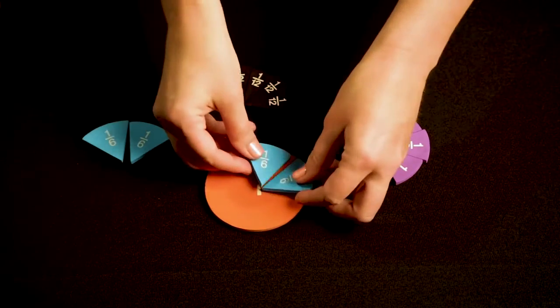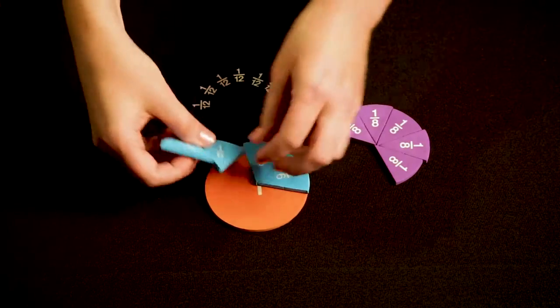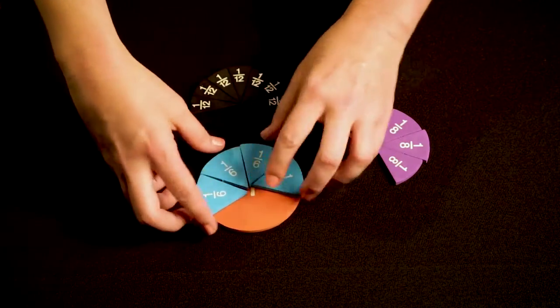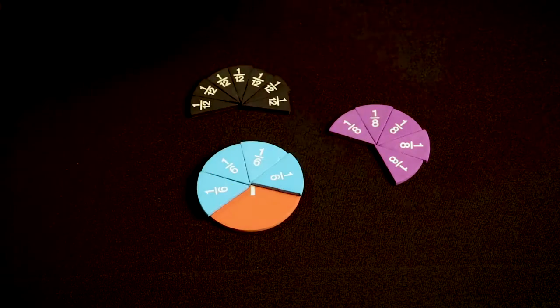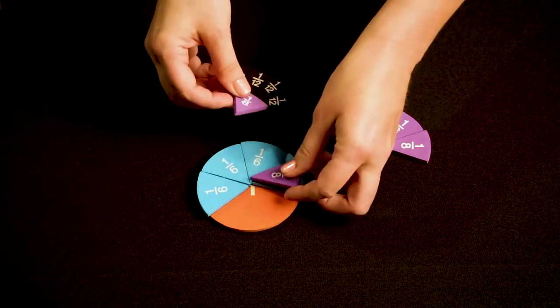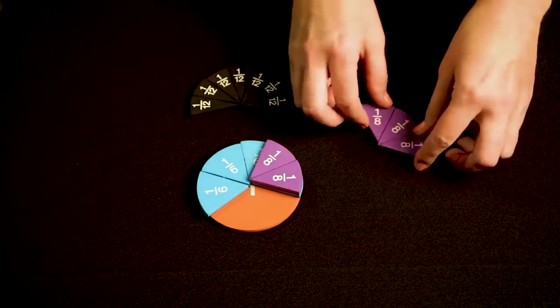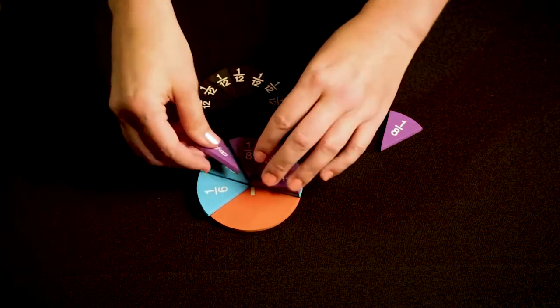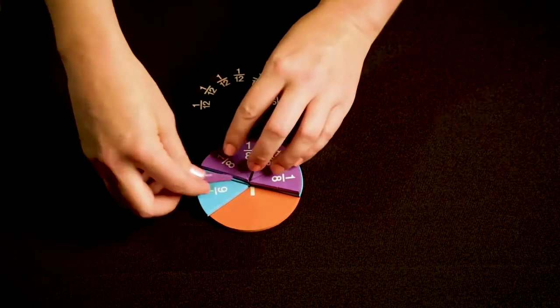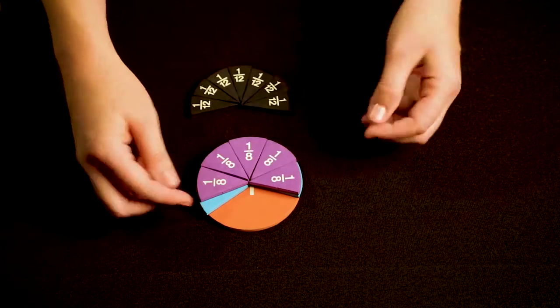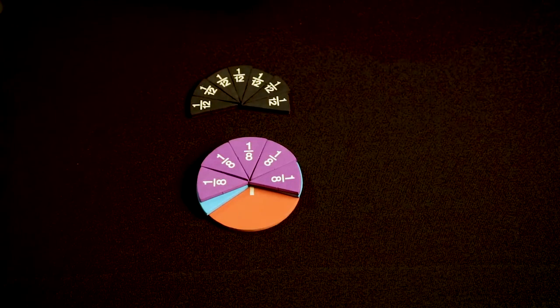Let's start with 4 sixths. I'm going to put my 4 sixths on the whole, and now I'm going to compare that 4 sixths to 5 eighths. I'll place that right on top to determine whether the fractions are greater or less. And it looks like 5 eighths is less than 4 sixths.